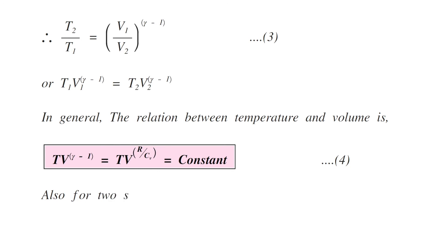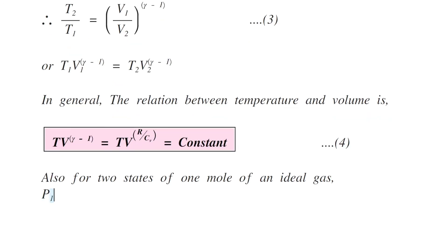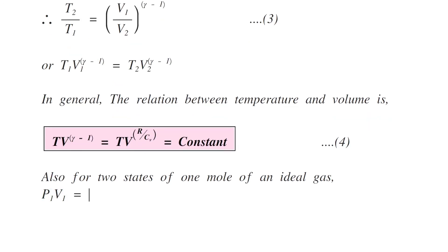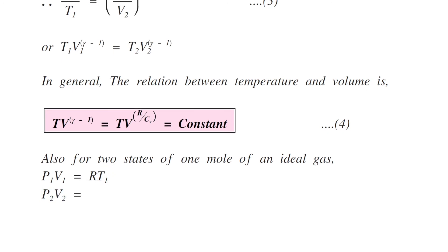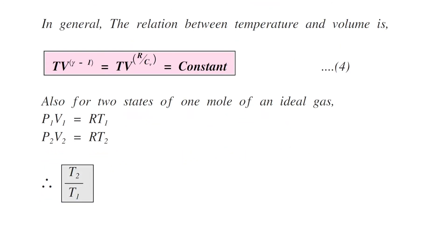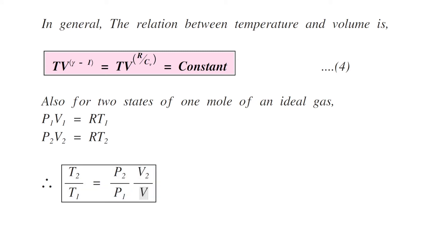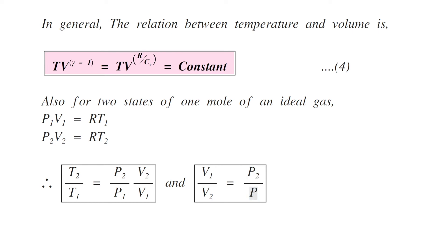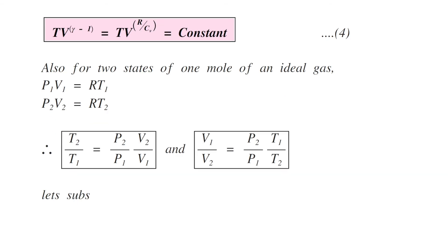For two states of one mole of an ideal gas, P1 V1 equals RT1 and P2 V2 equals RT2. Therefore, T2/T1 equals (P2/P1)(V2/V1), and V1/V2 equals (P2/P1)(T1/T2). Let's substitute the first value into equation number three.